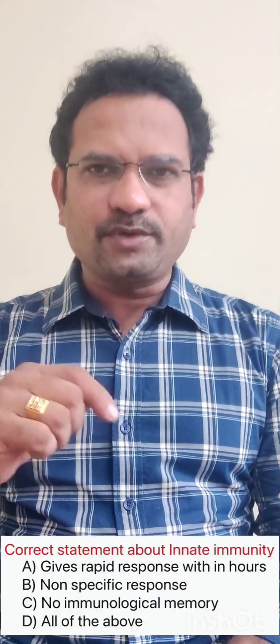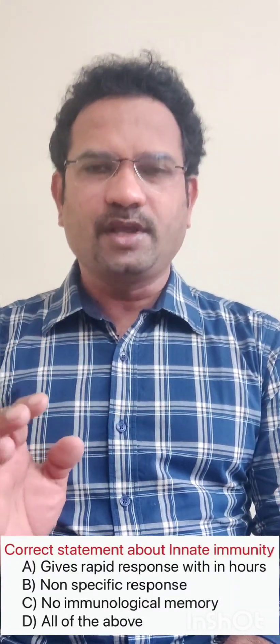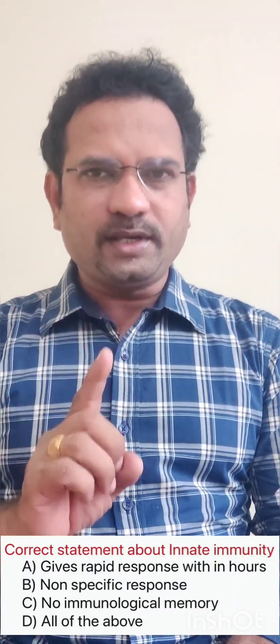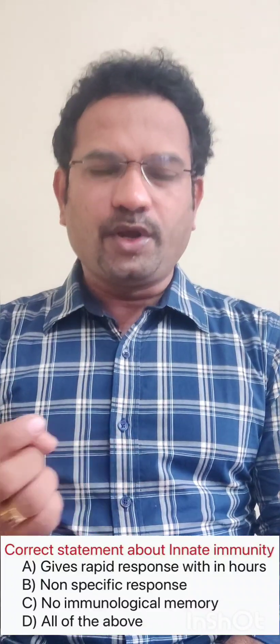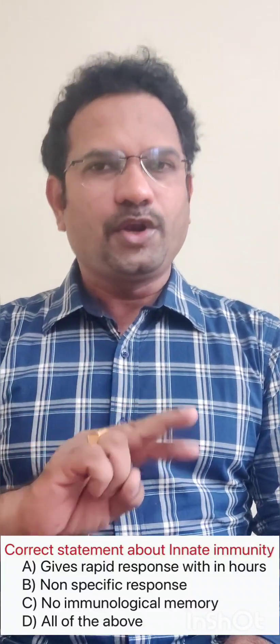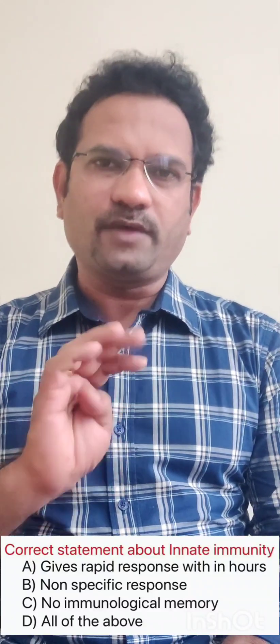Hello everyone. Welcome to the video series on multiple choice questions answer explanation. In this video, I will explain the questions from Immunology. Now look at the question. The first question is: the correct statement about innate immunity is — option one: rapid response within hours; option two: non-specific; option three: no immunological memory; option four: all of the above.